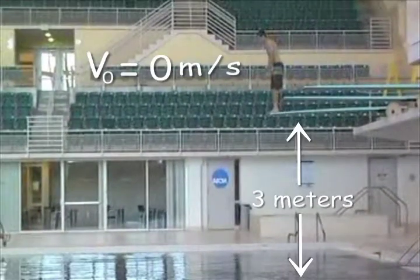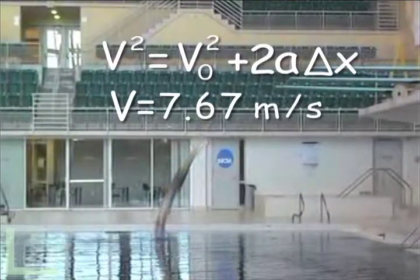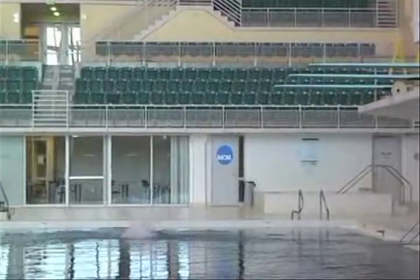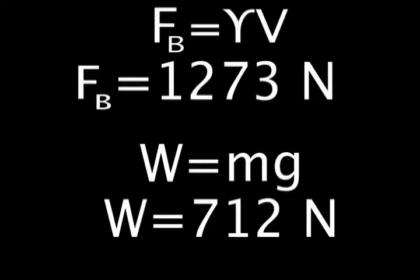Big John is at .13 meters above the water. He executes a great dive. He enters the water at 7.67 meters per second. Now, at .3, Big John has drag and buoyancy pushing him up and weight pushing him down. Buoyancy force is 1,273 newtons. Weight is 712.